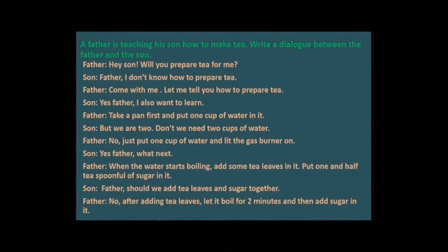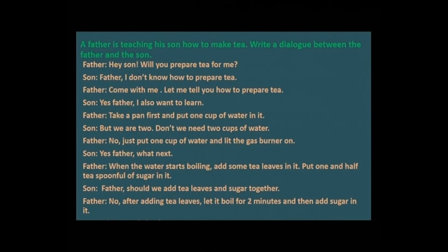Dear students, one more back exercise from your book. A father is teaching his son how to make tea. Write a dialogue between the father and the son. Father: 'Hey son, will you prepare tea for me?' Son: 'Father, I don't know how to prepare tea.' Father: 'Come with me. Let me tell you how to prepare tea.' Son: 'Yes father, I also want to learn.' Father: 'Take a pan first and put one cup of water in it.' Son: 'But we are two — don't we need two cups of water?' Father: 'No, just put one cup of water and let the gas burner on.' Son: 'Yes father, what next?' Father: 'When the water starts boiling, add some tea leaves in it. Put one and a half teaspoonful of sugar.' Son: 'Should we add tea leaves and sugar together?' Father: 'No, after adding tea leaves, let it boil for two minutes and then add sugar.'